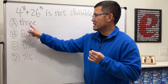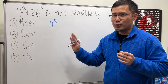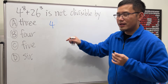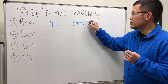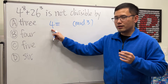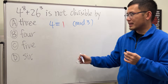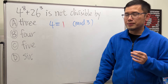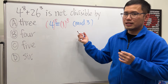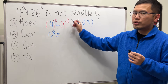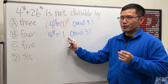First, let's check if the expression is divisible by 3. We have 4 to the 8th power. Don't look at the power yet — just look at 4, and think about what it's congruent to mod 3, because we're trying to divide by 3. 4 divided by 3 is 1 with remainder 1, so 4 is congruent to 1 mod 3. In modular arithmetic, we can raise both sides to the same power: 4 to the 8th is congruent to 1 to the 8th, which is still 1. So 4 to the 8th power is congruent to 1 mod 3.